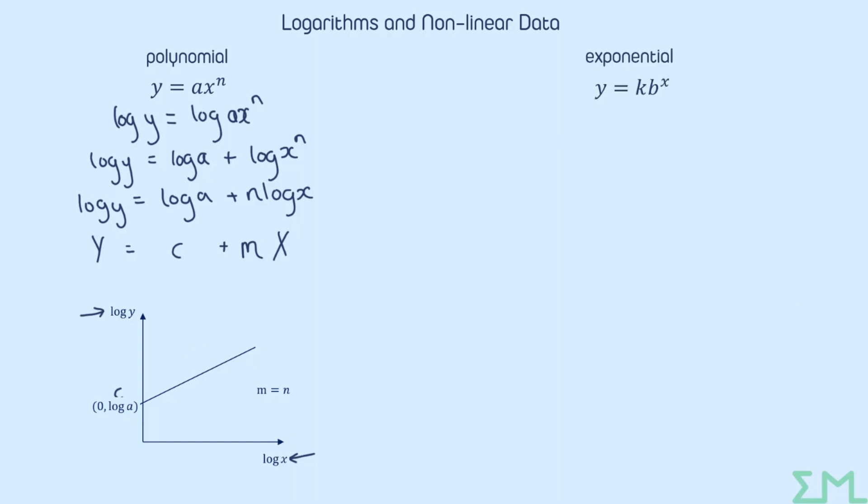Right, let's have a look at an exponential model. So y equals kb to the x. The difference here is that our independent variable is in the exponent, is in the power, whereas in the polynomial functions, it was a base number. So it was not in the power.